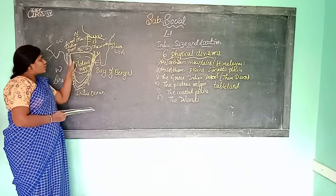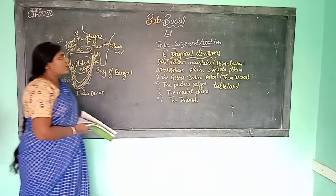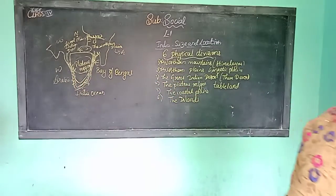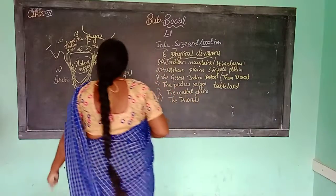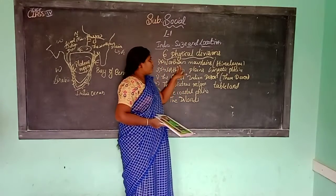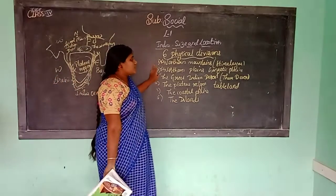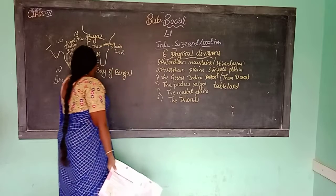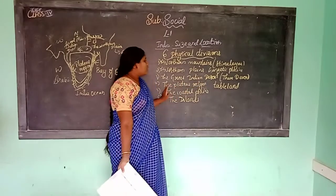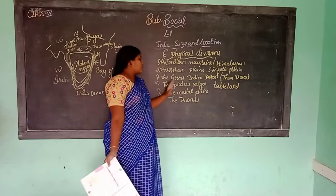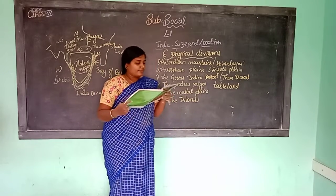Now we will learn about States and their Capitals. Delhi is the capital of India. How many states are there in India? There are 29 states and 7 Union Territories.